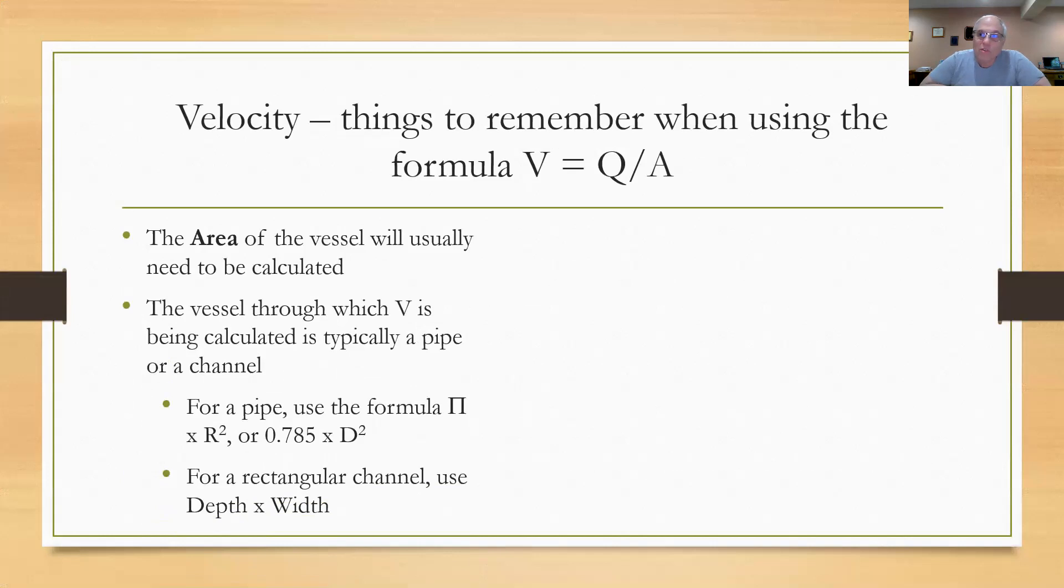There's some things we're going to have to remember when using the formula V equals Q divided by A. First, the area of the vessel is usually going to need to be calculated. In the last example I gave you the area, but you're not going to get that lucky on your exams. The vessel through which V is being calculated is typically a pipe or a channel.